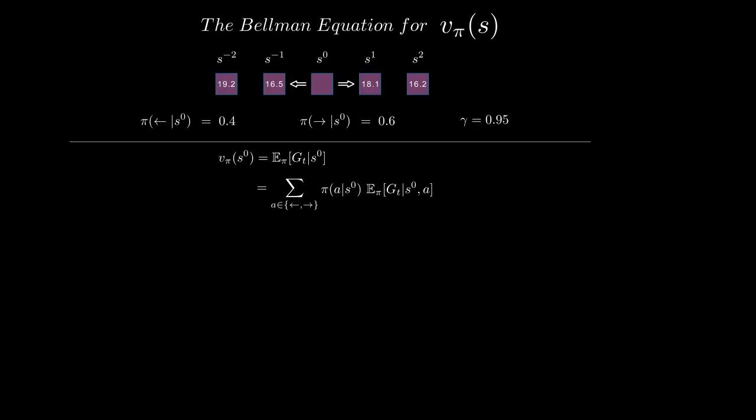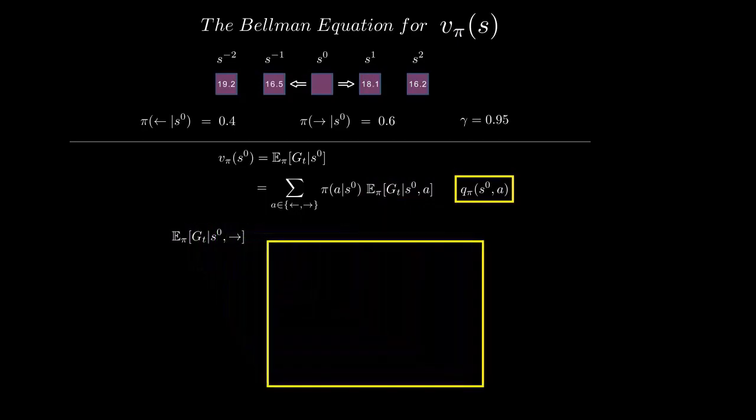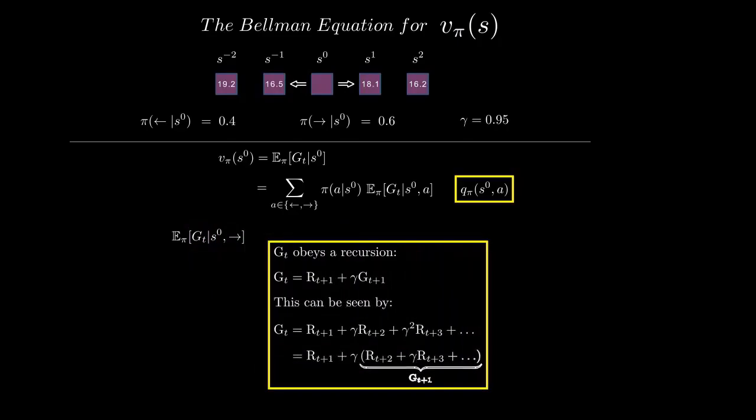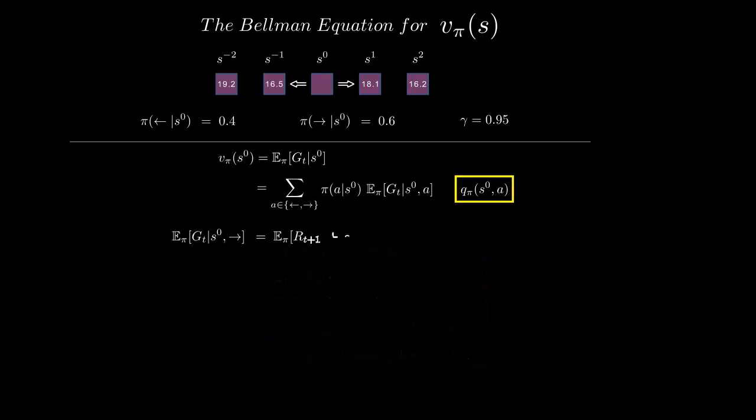Also, if you're observant, you'll recognize that this term is in fact an action value. Okay, from here, let's pick up the go right expectation and recognize something about G_T. It obeys a simple recursive relationship. G_T is equal to the reward plus the once discounted return one step later. With a little algebra, that's not too hard to see. And so, we can write it like this.